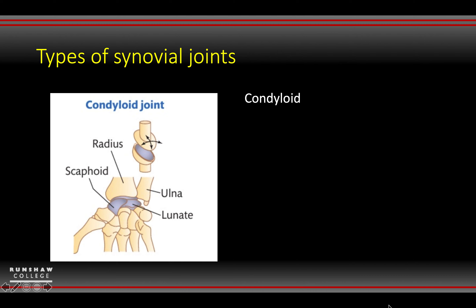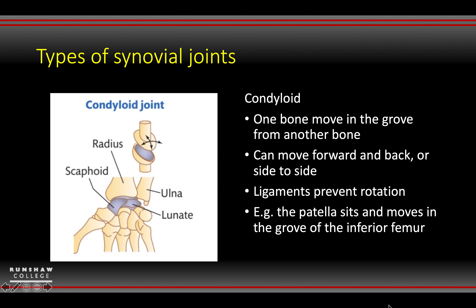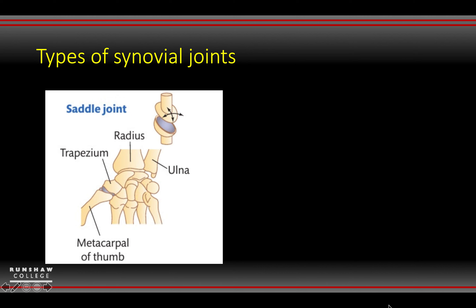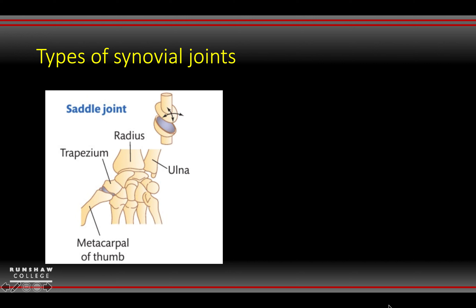Then you've got your condyloid joint, which can be found where one bone will move over a groove of another. It can move forward and back or side to side, and ligaments prevent rotation. The patella sits and moves in the groove of the femur, making sure traction goes forwards and backwards in a smooth way. The condyloid joint is also seen at the wrist, based at the end of the radius — you can rotate the wrist through supination and pronation, so in that respect it can be classified as condyloid as well.